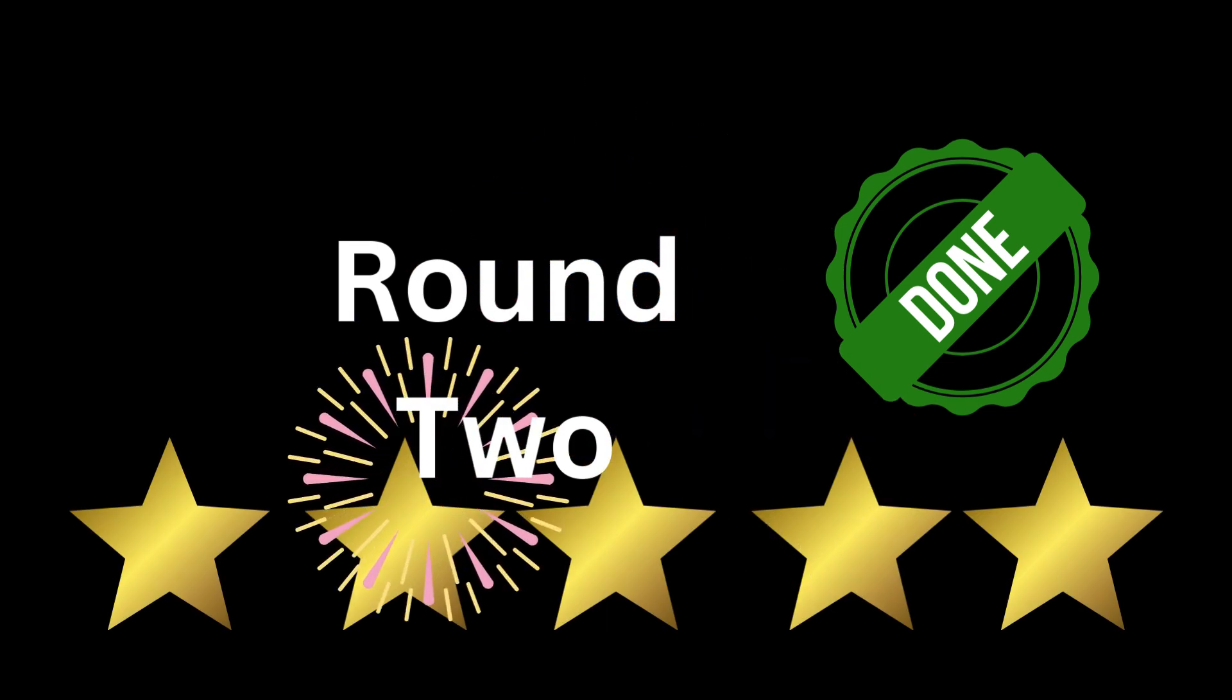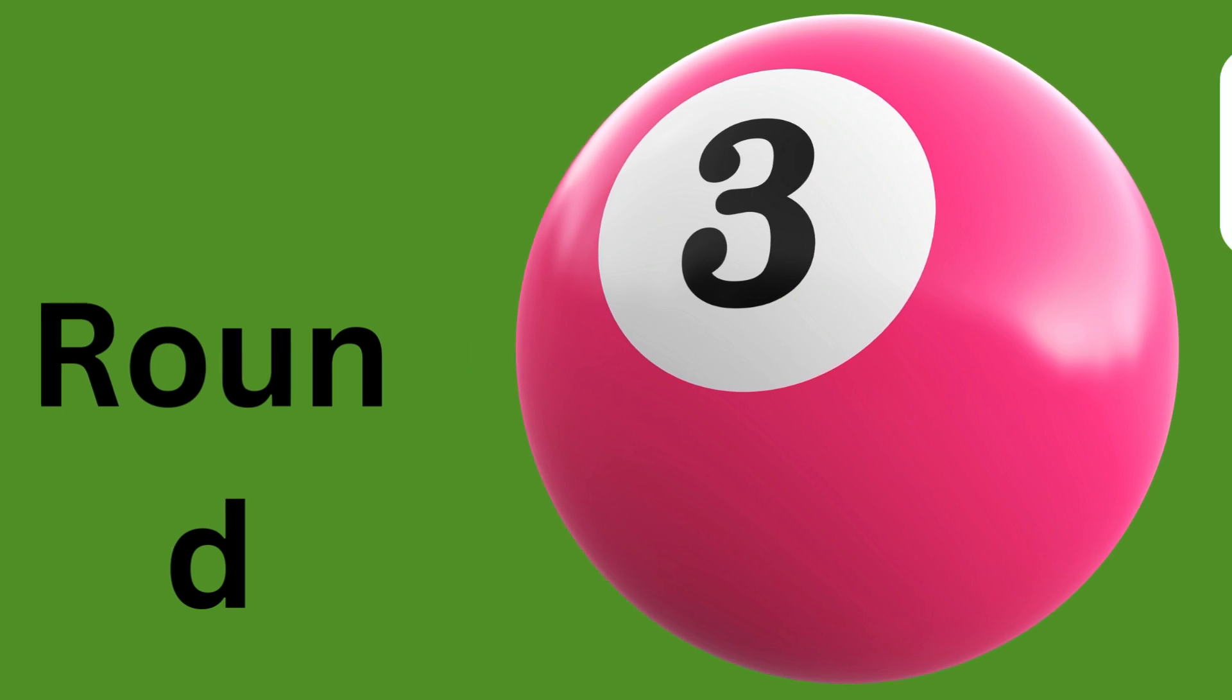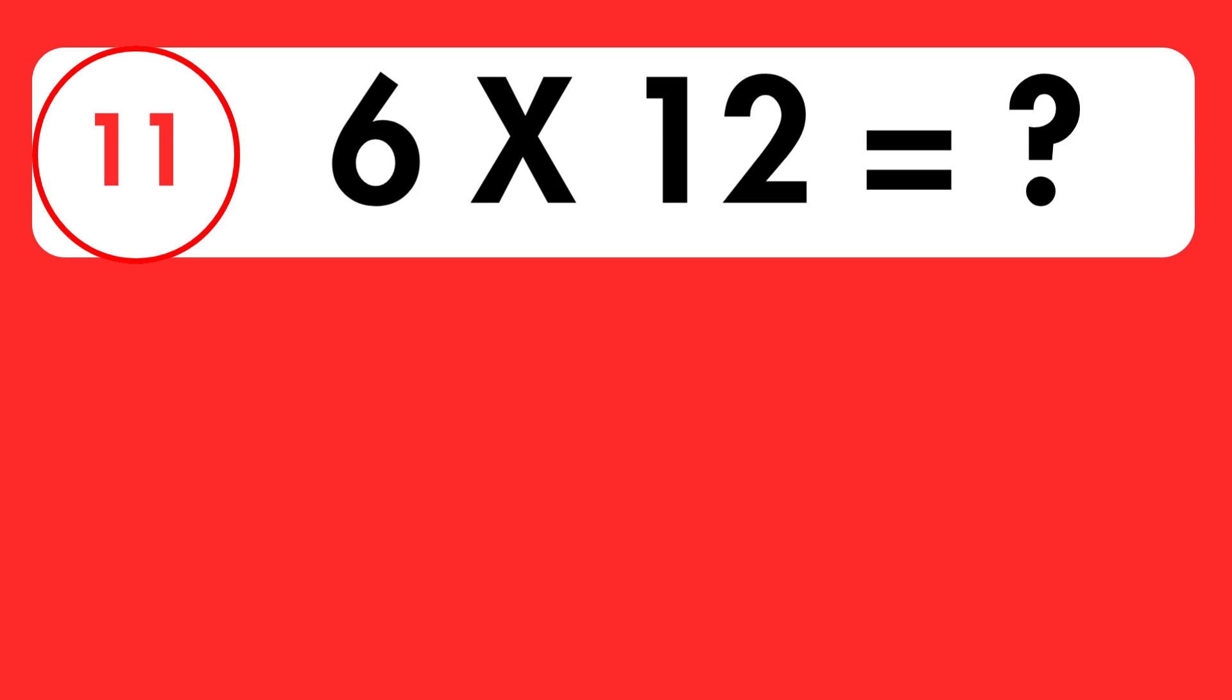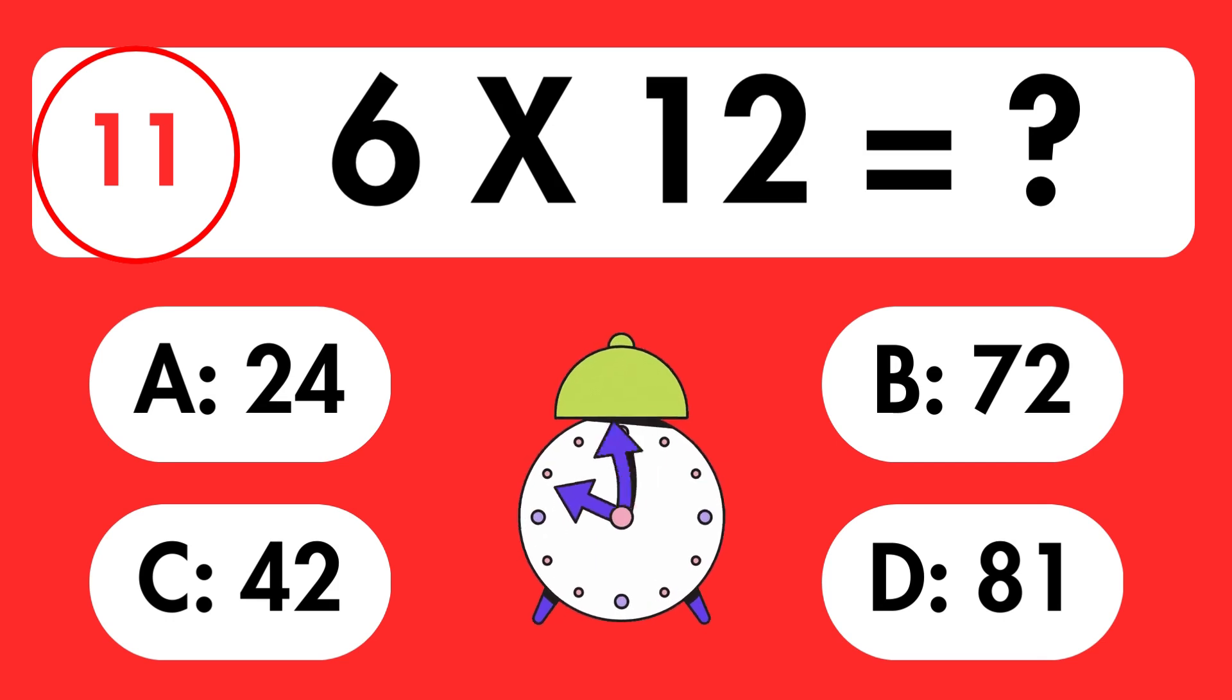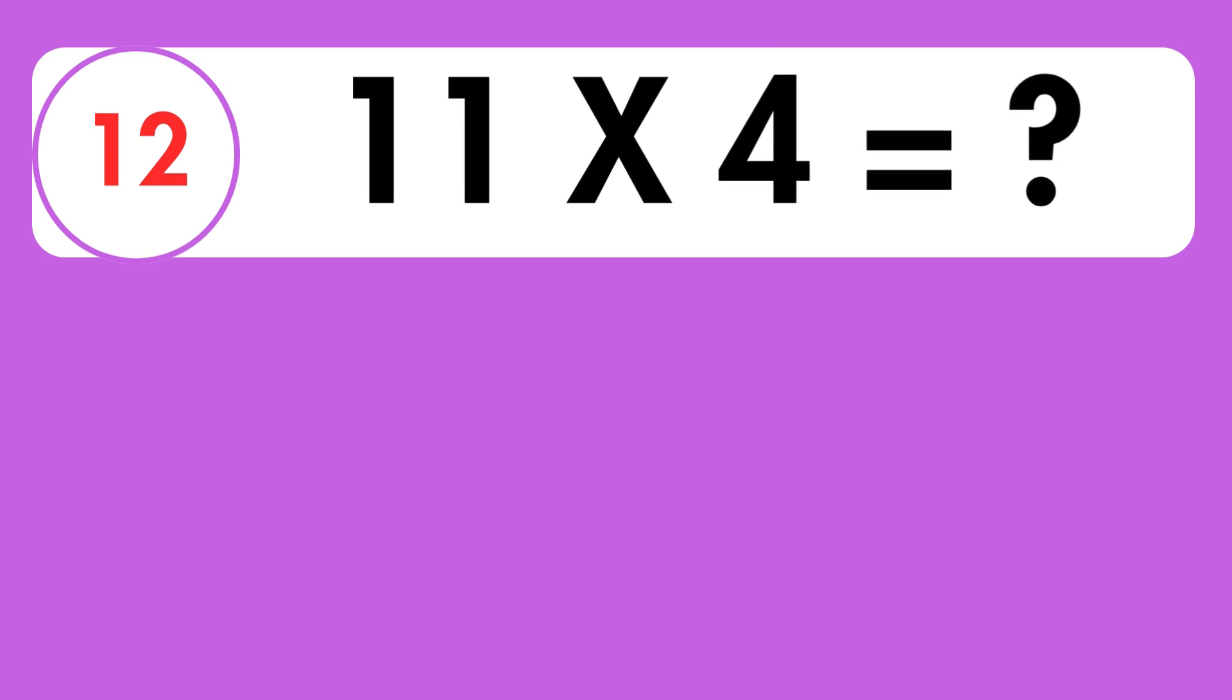9 times 9 is equals 81. Wow, round two complete! Those were some challenging multiplication facts. How many stars did you earn this round? Round three. It's time for our final round. Are you ready for the ultimate challenge? Question 11. What is 6 times 12? Time's up. The answer is 72.